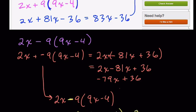So it's 2x minus 81x, so 2x minus 81x, but we're also subtracting negative 36, so that's plus 36.